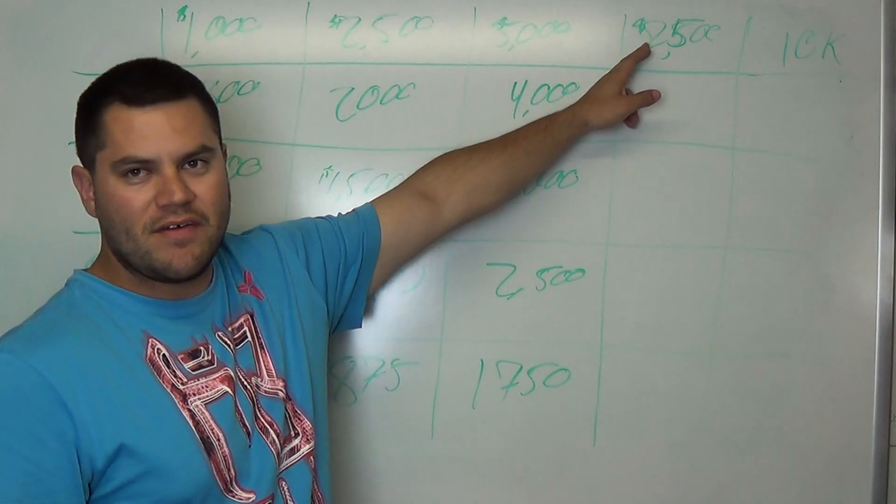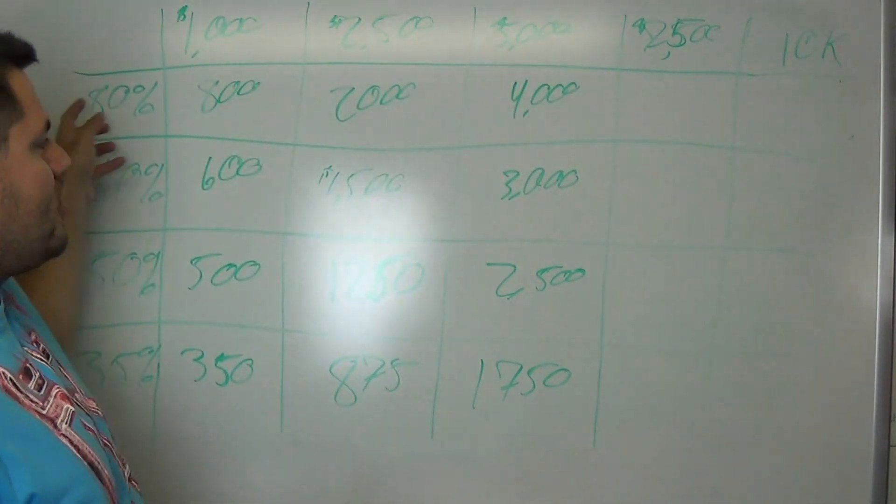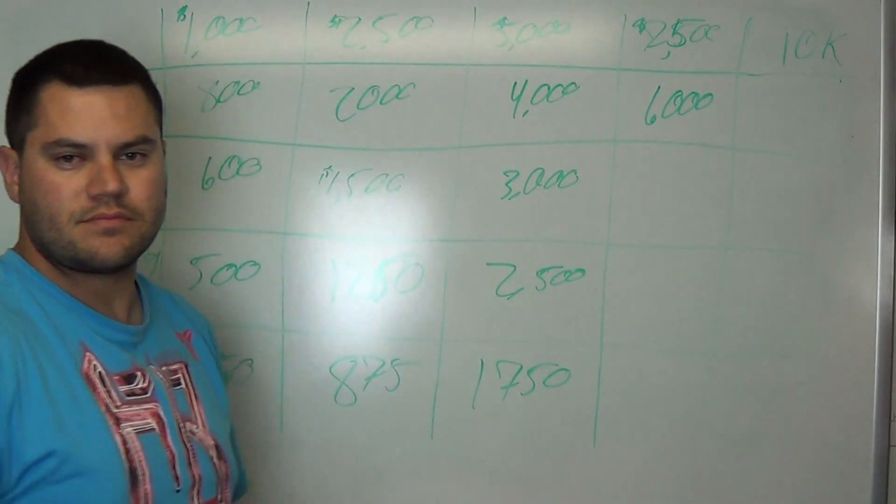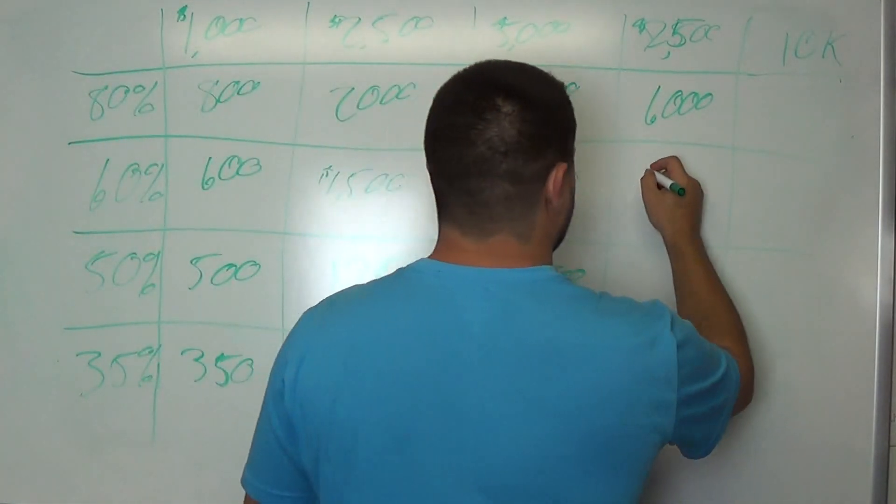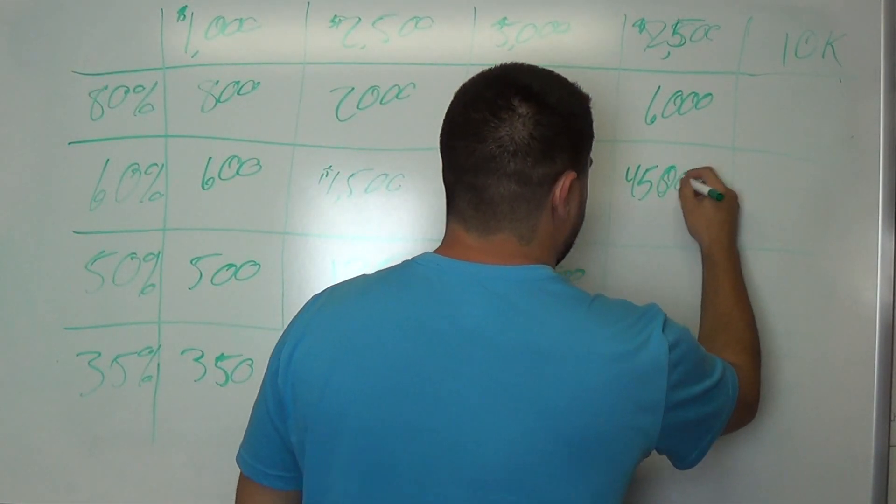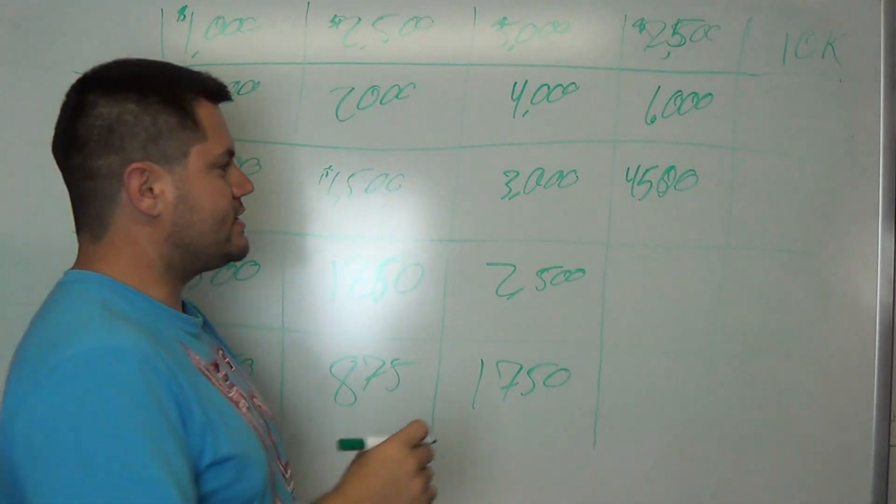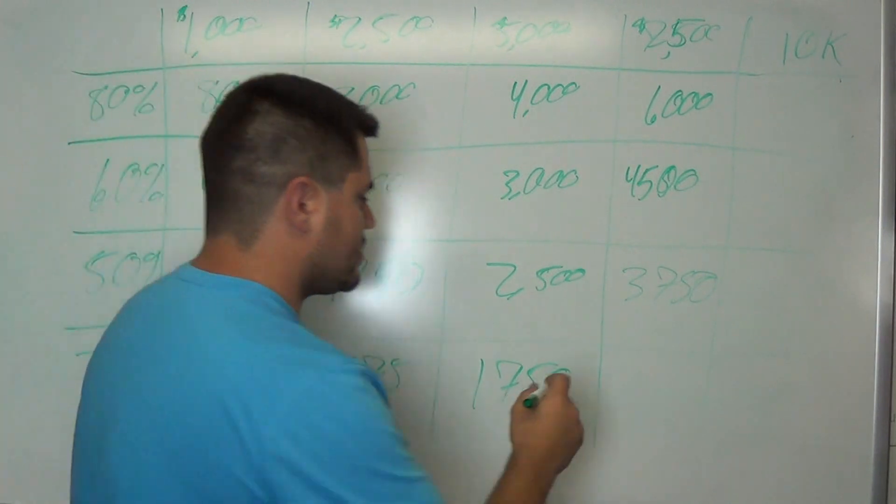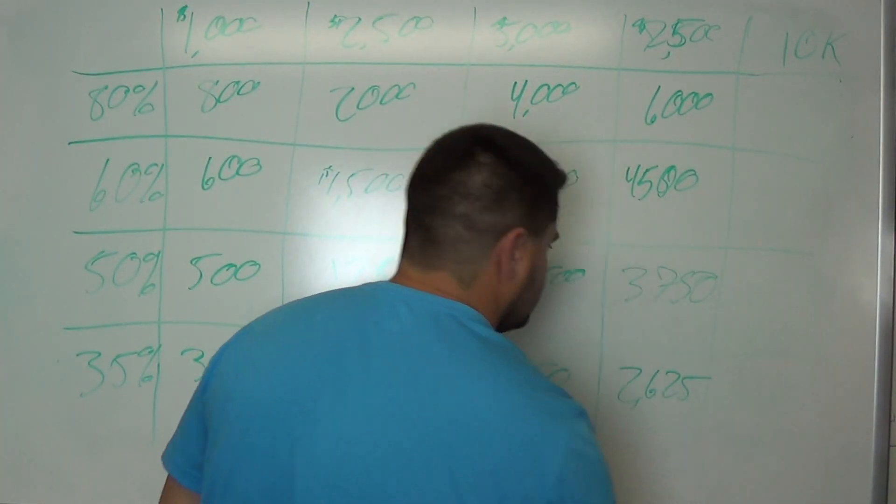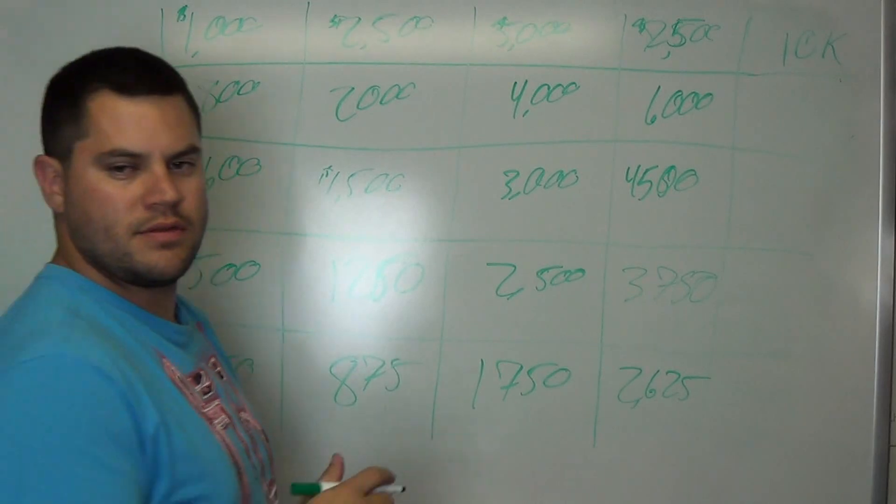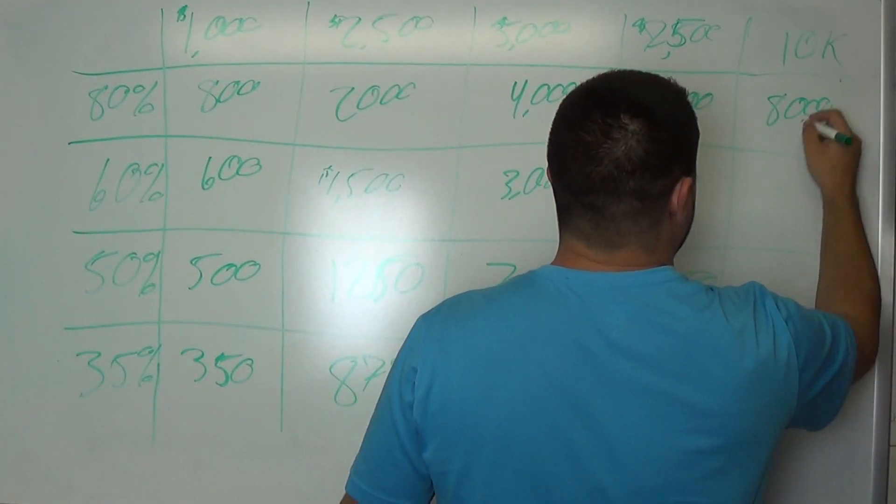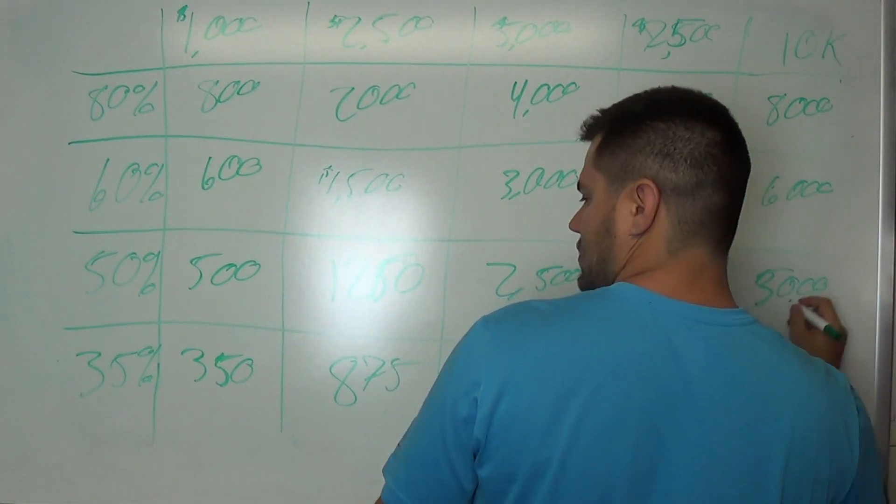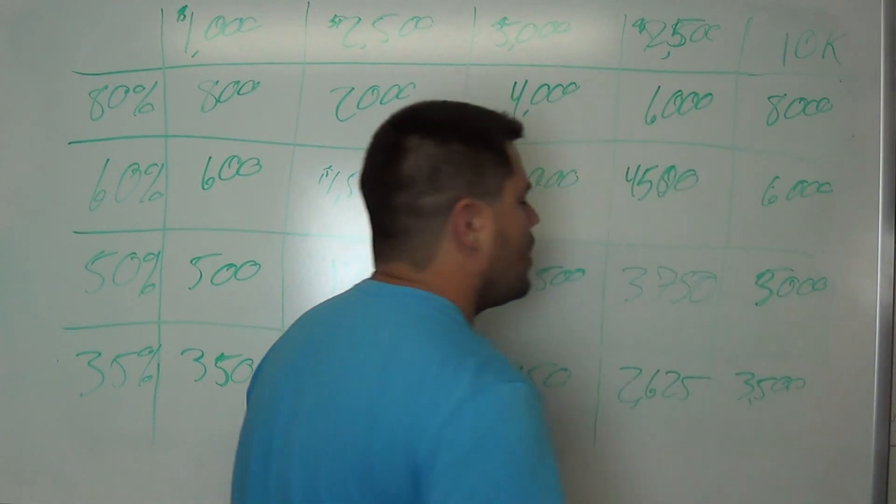Now, if you're spending $7,500 a month, and these are your profit margins, this is what you make. 6,000. 4,500. 3,750. And 2,625. 10,000.